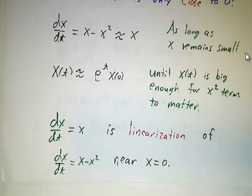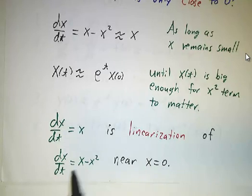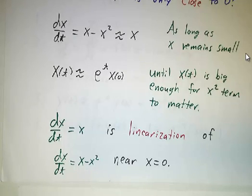Now in this case, the approximate equation dx/dt = x is called the linearization of the exact equation. This is the true equation. This is the linearization. The linearization is an approximation. We say we do this near x = 0.